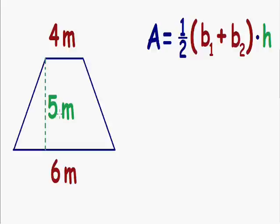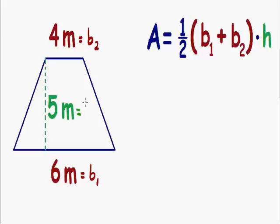Before we start plugging things into the formula, I'm going to label everything in our trapezoid. I always like to label B1 as the bottom side, so our bottom side with a length of six meters is going to be our B1. That means B2 is the length of our top side, which is four meters. And the height is always the vertical distance between the top and the bottom, which is given as five meters — so five meters is our height.